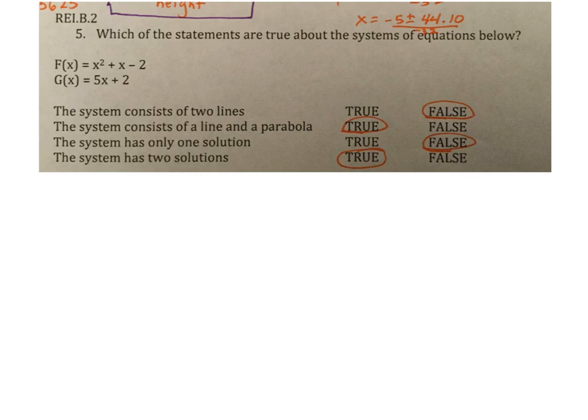All right. Number five, which of the statements are true by the systems of equations below? So your first step on a problem like this, type these into your graphing calculator under the Y equals, go to Y equals, type this right here, go to the Y2, type this right here and hit graph. So that way you have a visual. The system consists of two lines. False. One reason you know that without even graphing it is because that X squared, we should know that X squared gives me the parabola shaped graph.